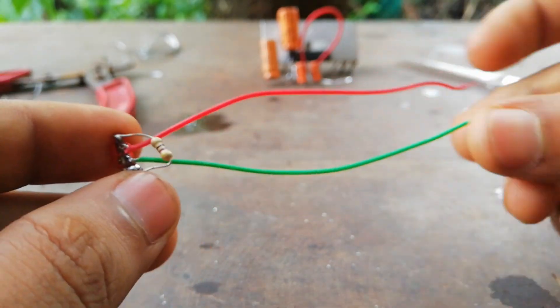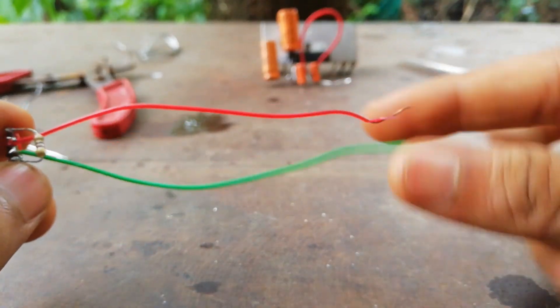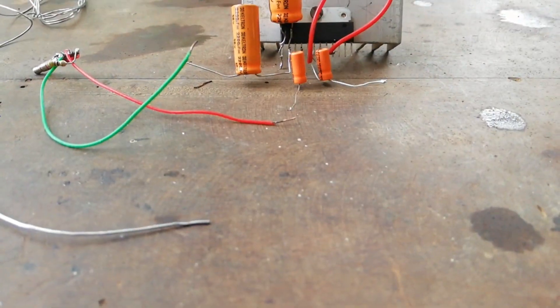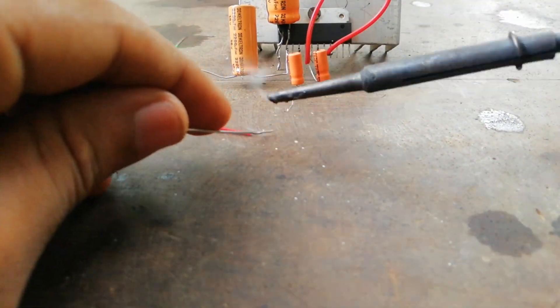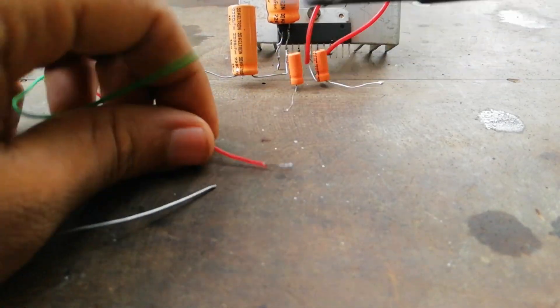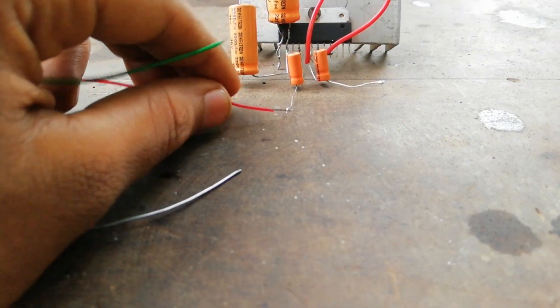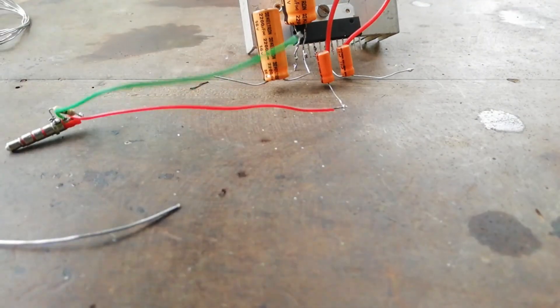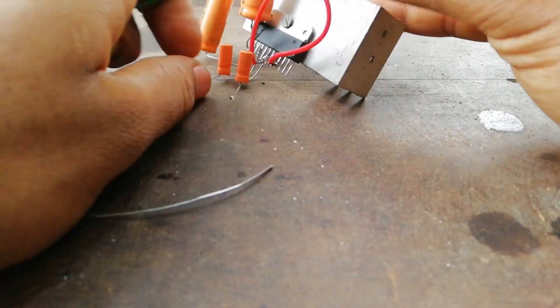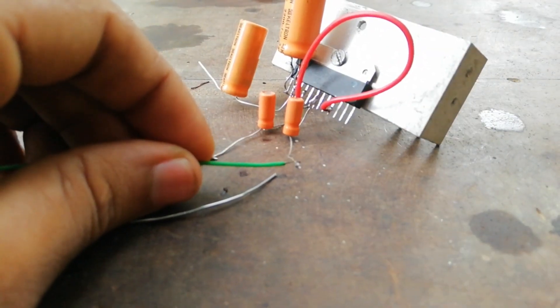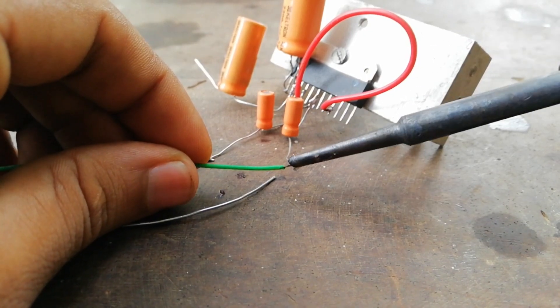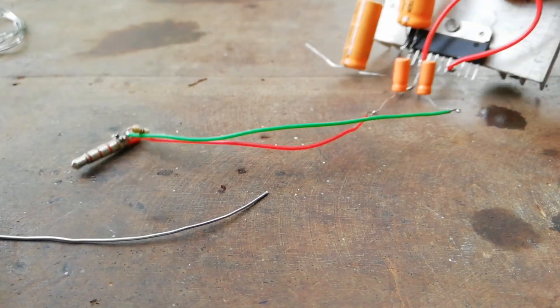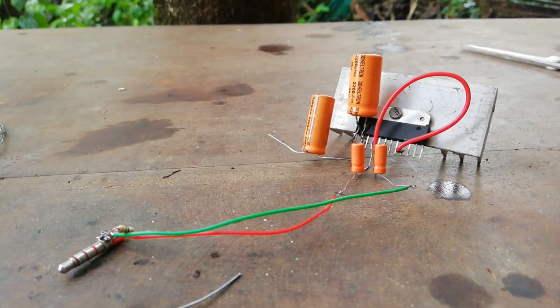I will connect this amplifier. I will solder the wires to the first 10 microfarad capacitor and the other 10 microfarad capacitor. We need to solder the two capacitors. We need to solder the audio jack and the speaker.